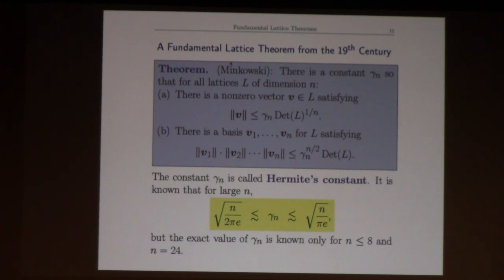Not quite bounded, it's polynomial. So gamma_n is called Hermite's constant. One can show there are upper and lower bounds. Roughly speaking it looks like a scalar multiple of square root of n. Here's the upper bound, here's the lower bound - they only differ by one over root two. It's a major open problem to compute the exact value of gamma_n. It's known for all n less than or equal to eight, and for n equals 24.